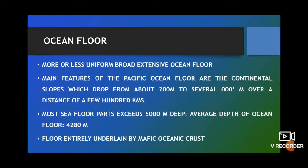The floor of the Pacific Ocean, like those of other oceans, is actually very flat, even in areas having seamounts or deep trenches. The vast sediment-covered abyssal plains of the oceans are much flatter than any similar-sized areas on the continents. The main features of the Pacific Ocean floor are the continental slopes that drop from about 200 meters to several thousand meters over a distance of a few hundred kilometers. The ocean floor is almost entirely underlain by mafic oceanic crust, and most of the seafloor exceeds 5,000 meters deep. The average depth of the Pacific Ocean floor is considered to be 4,280 meters.